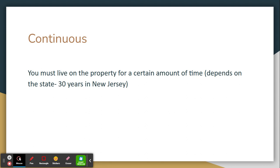Next is continuous. As previously mentioned, you must live on the property for a certain amount of time, and that is depending on the state. In New Jersey, for most residential homes, it is 30 years. That's all — thank you so much for watching.